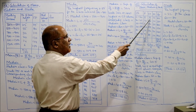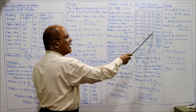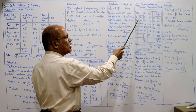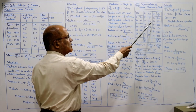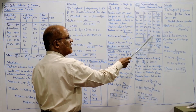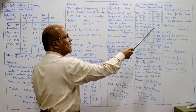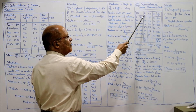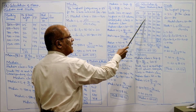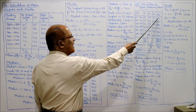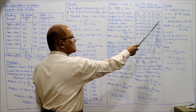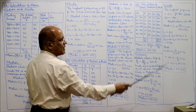Mid values: (0+20)/2=10, 30, 50, 70, 90. Now multiply frequency with mid value (FM): 8×10=80, 12×30=360, and so on. The total ΣFM = 5030.